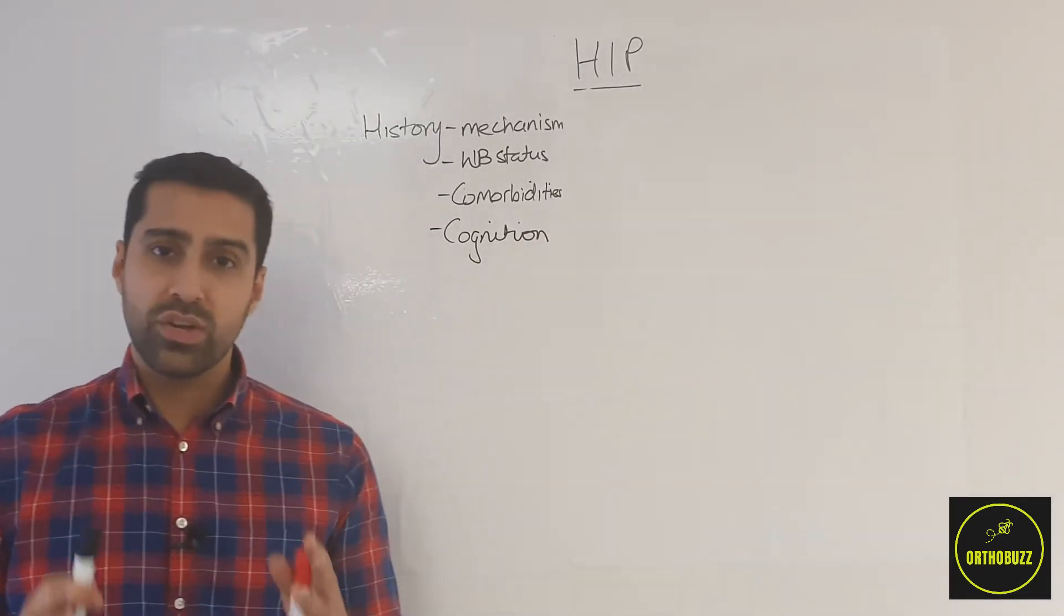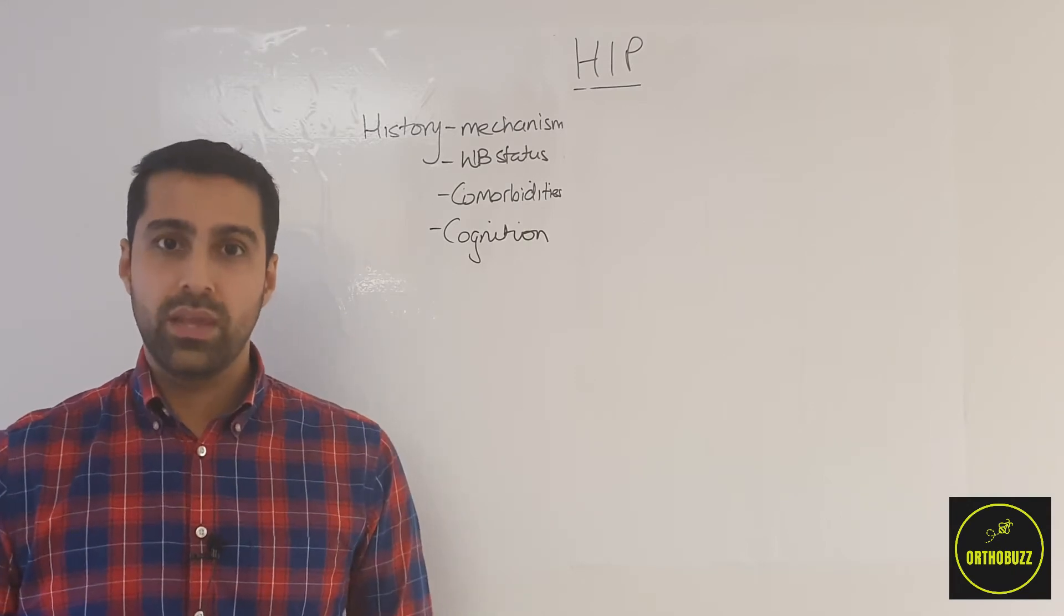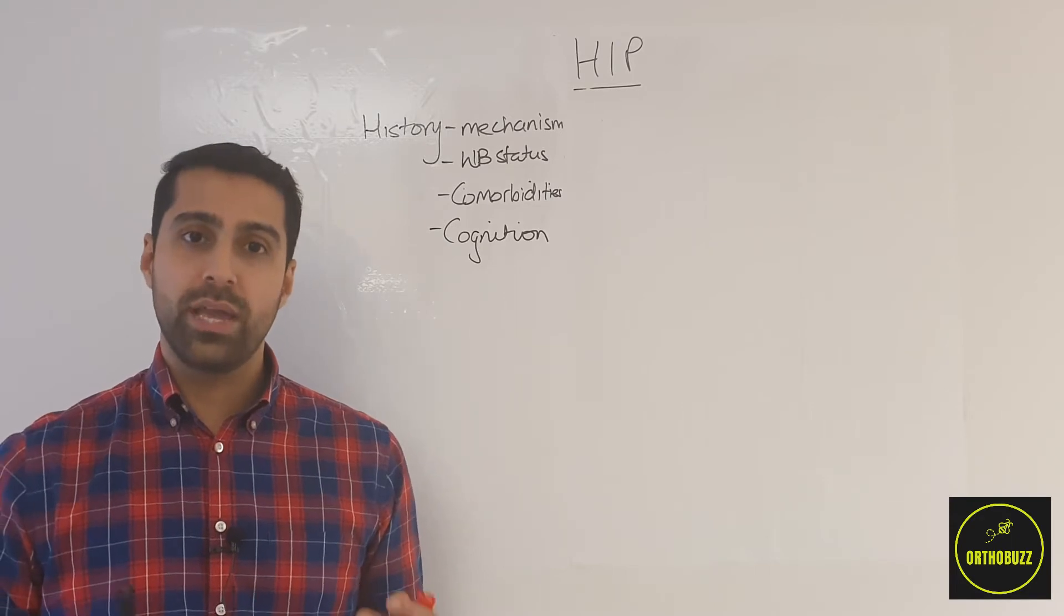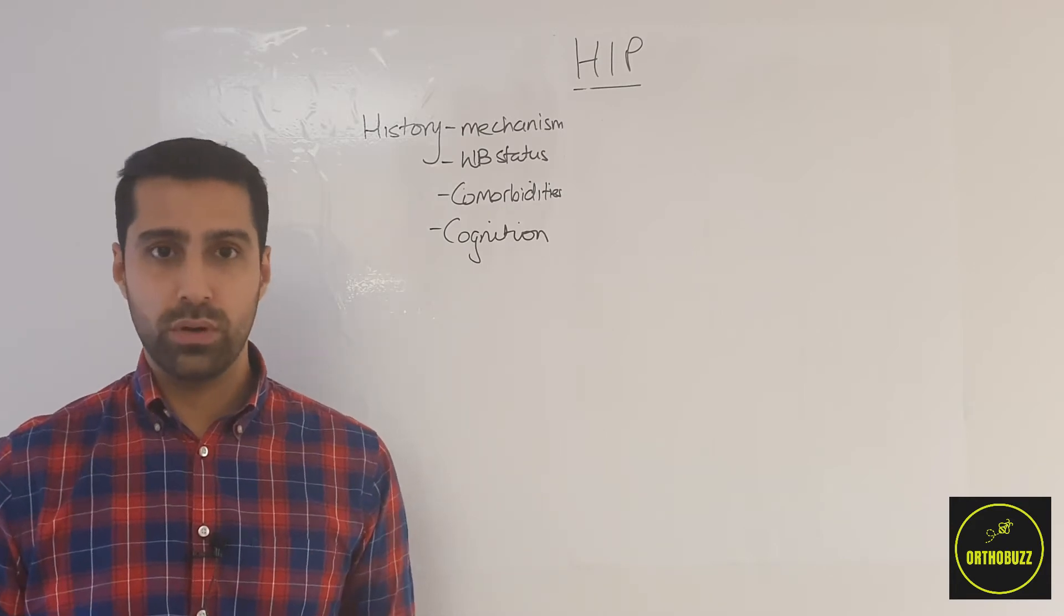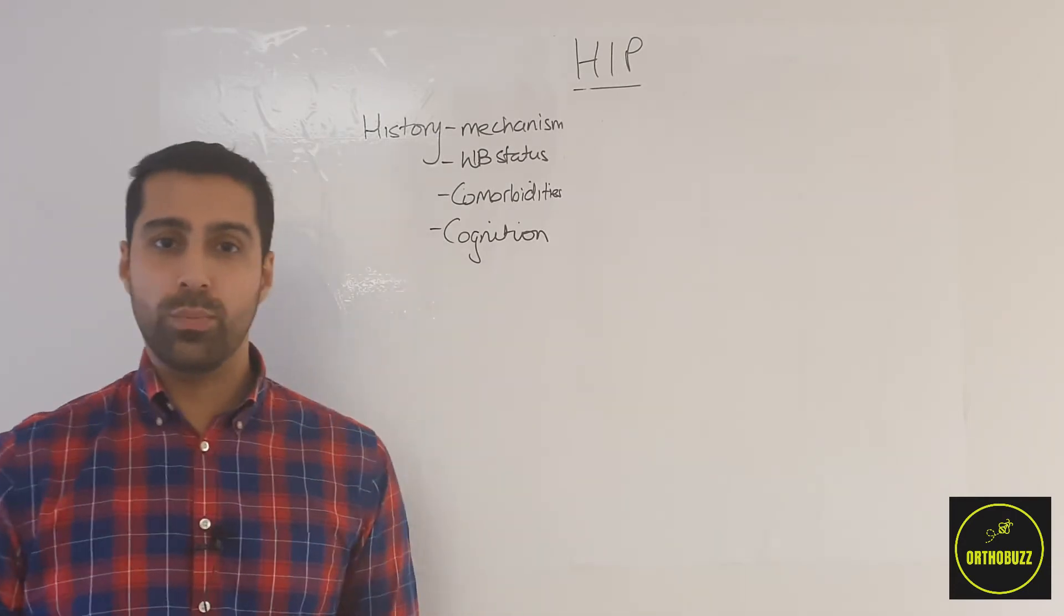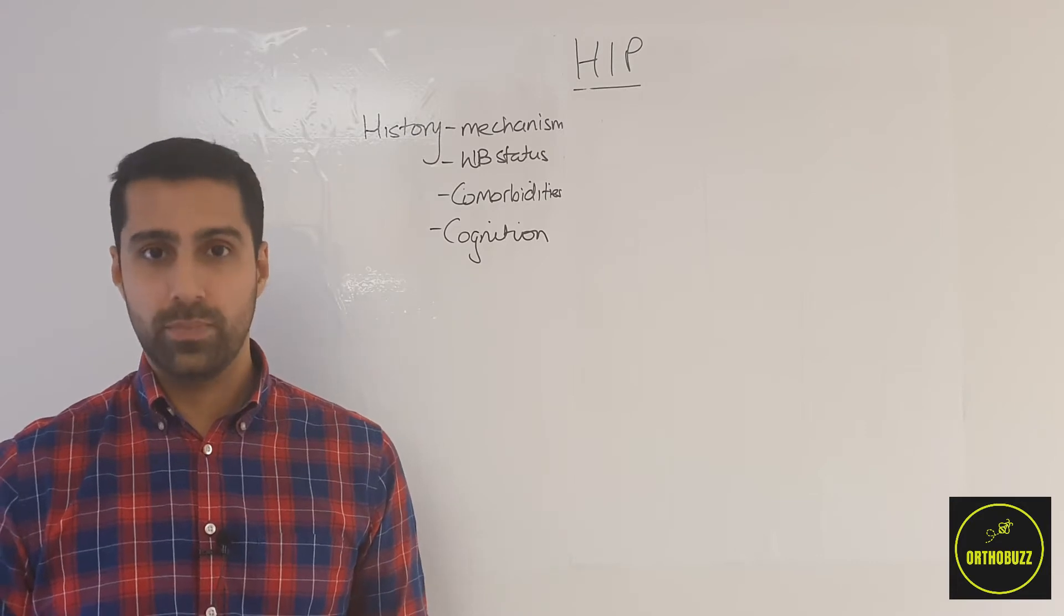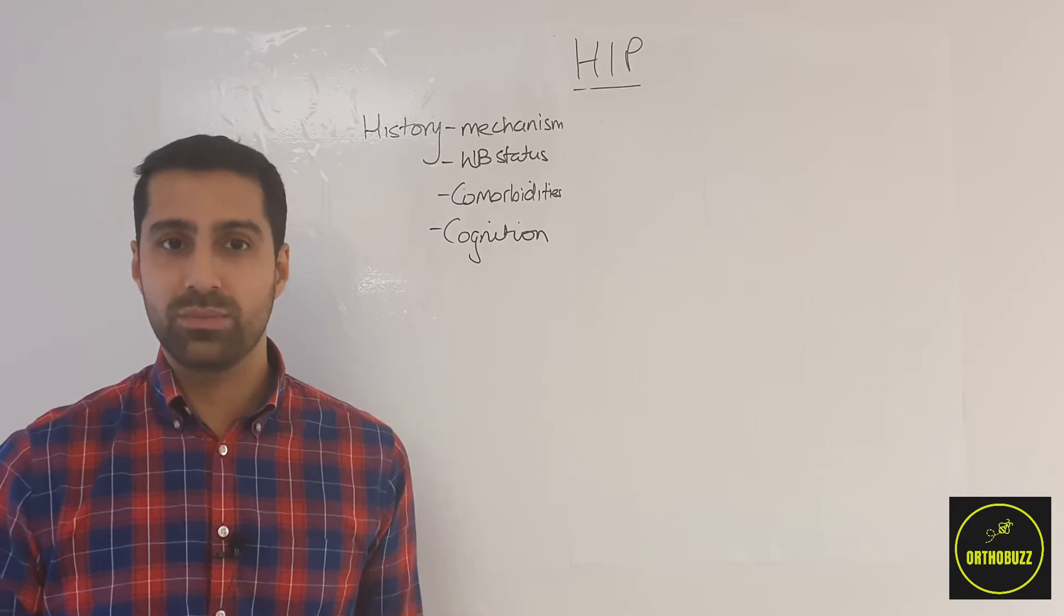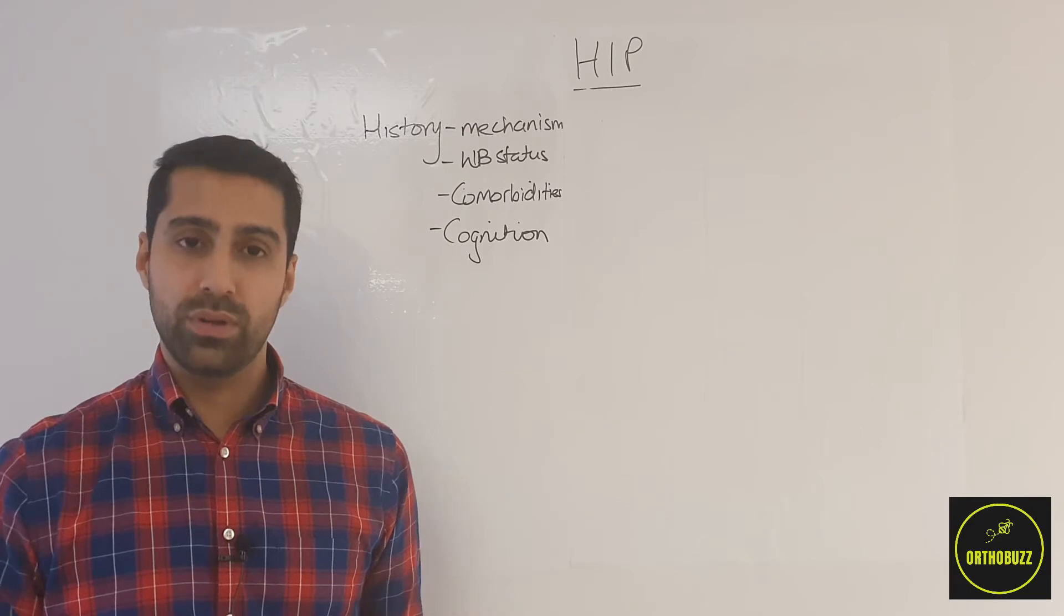And finally, you want to focus on cognition. Now we've been told that Mrs. Green has got Alzheimer's disease, and therefore it's unlikely that she would have appropriate cognition to be able to converse with us. This can most easily be assessed using the abbreviated mental test score, and it's very important to do this as the success of hip operations not only rely on the operation but also on the rehabilitation and the engagement that the patient is able to do with that. Patients who have dementia or Alzheimer's disease may not be able to engage as much with rehabilitation, and therefore this is important as to their prognosis and their outcome.